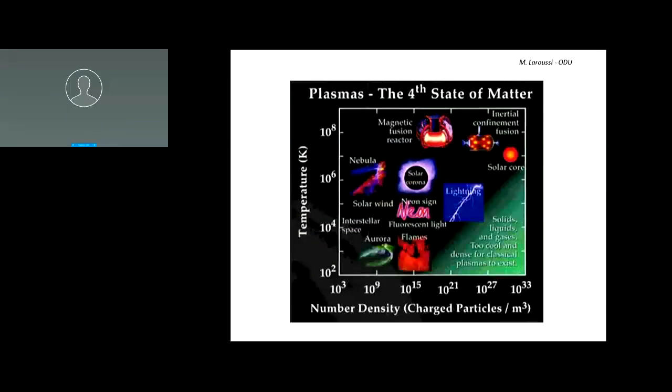This is a popular slide that shows temperature and density — the number of particles per unit volume — and where everything fits. You can see, for example, the core of the sun, which is very hot and very dense, and nuclear fusion devices that are even hotter than the sun but less dense.